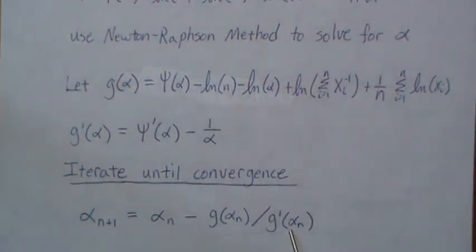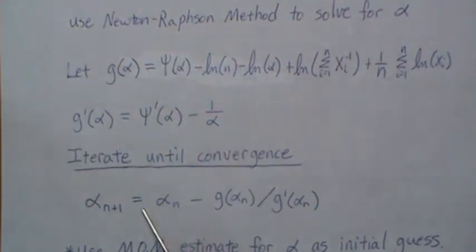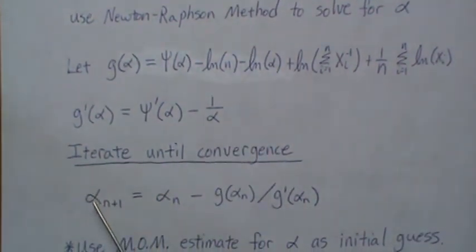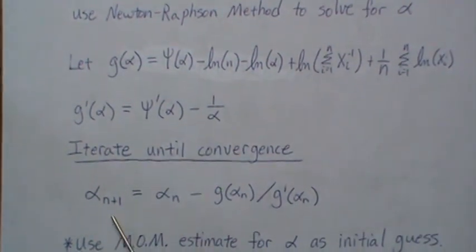And then we replug it back into this equation and get a new estimate. And we keep iterating this until each successive estimate for alpha gets closer and closer to each other. And that's called convergence.